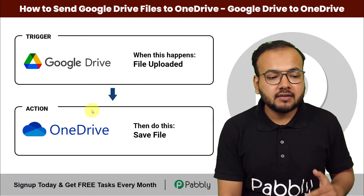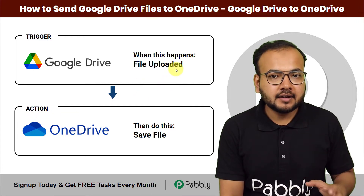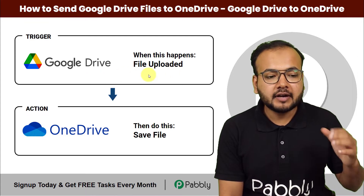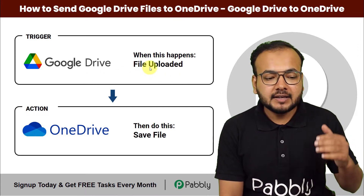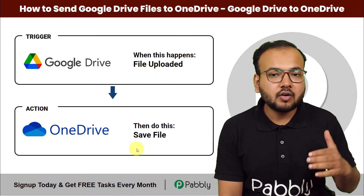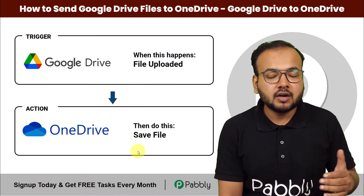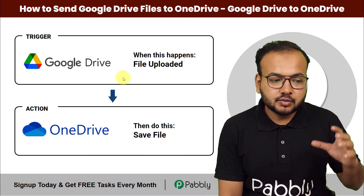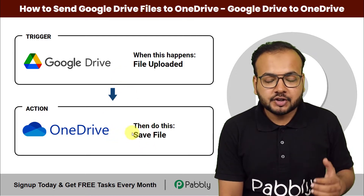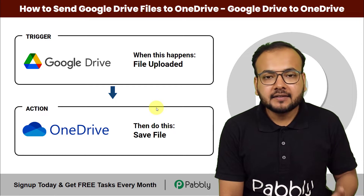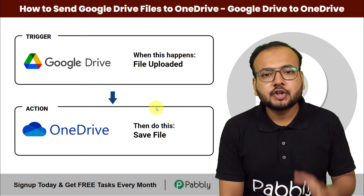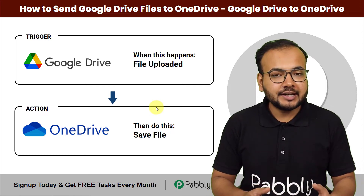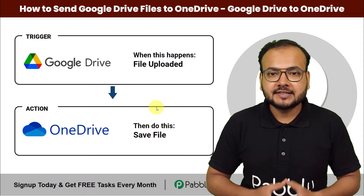Whenever you upload a file in any specific folder in Google Drive, the same file will be saved in your OneDrive account automatically. To set up this automation, we are going to use Pabbly Connect, which is an automation tool, and we are going to set up this automation without any coding, very easily.